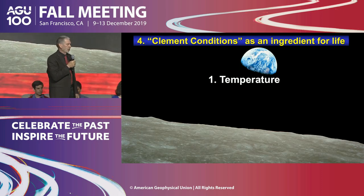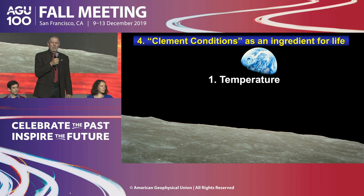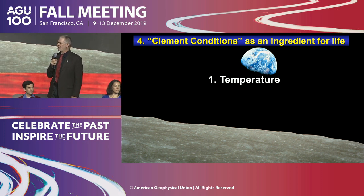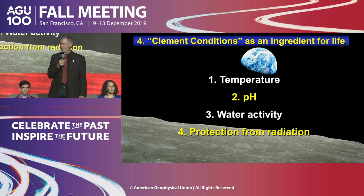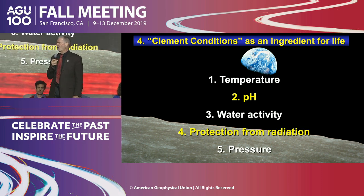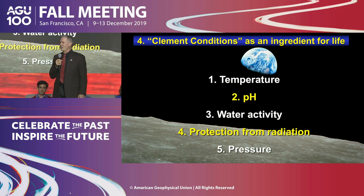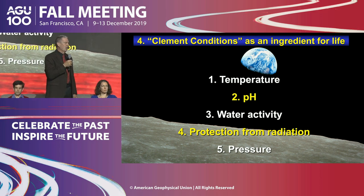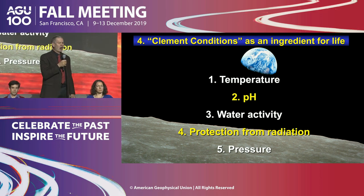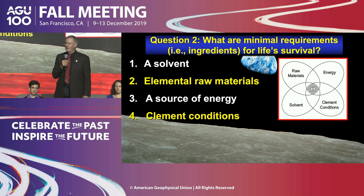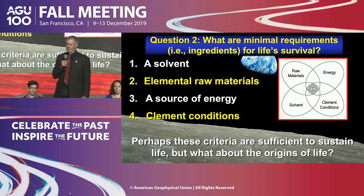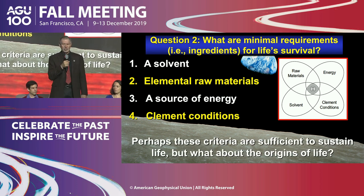Holler and colleagues also talk about clement conditions: temperature, pH, the activity of water, protection from radiation, and pressure. These are all part of the equation needed for survival of life. And I think perhaps these criteria are sufficient to sustain life.